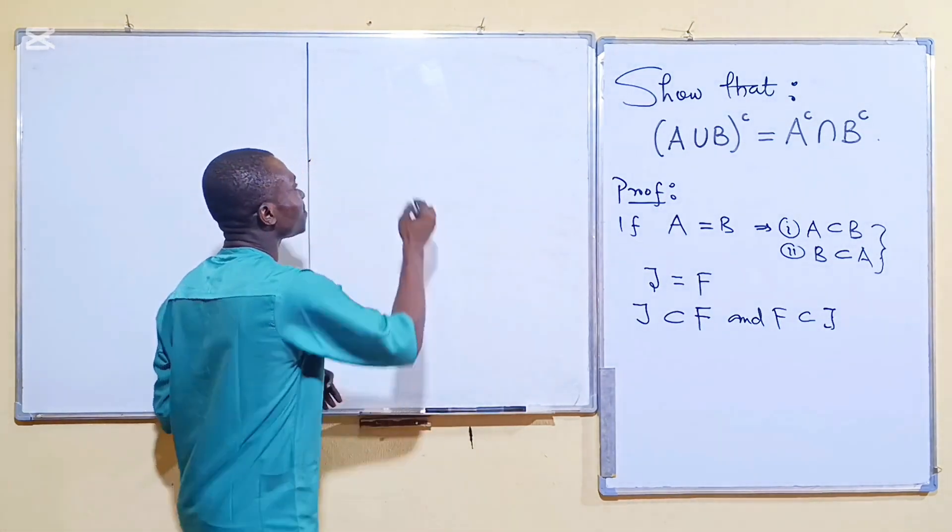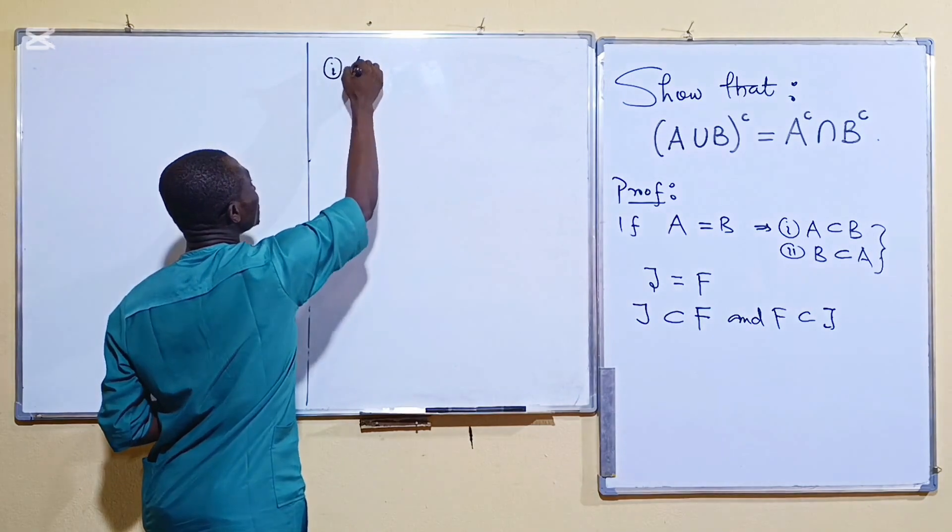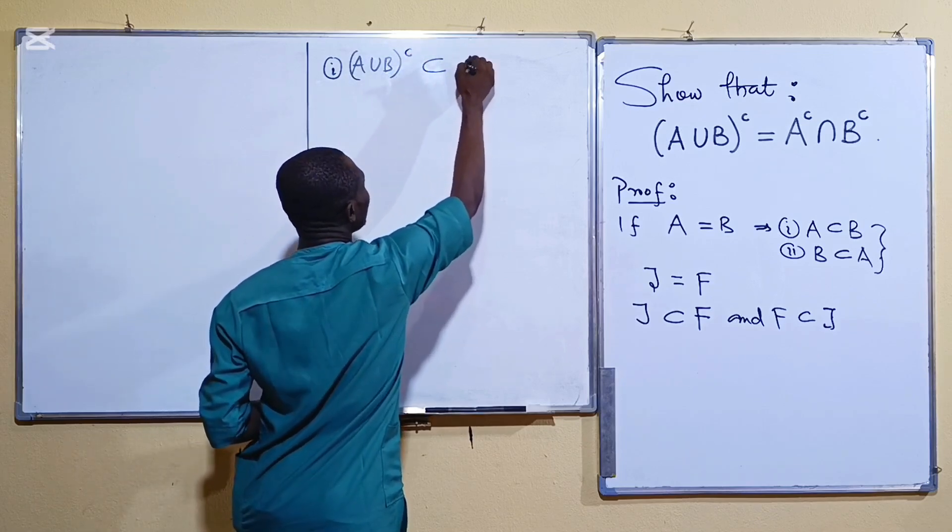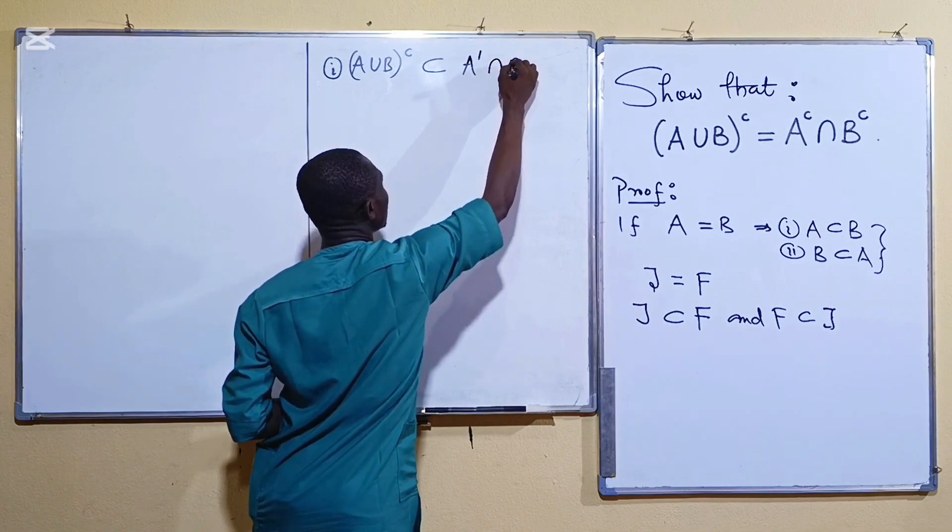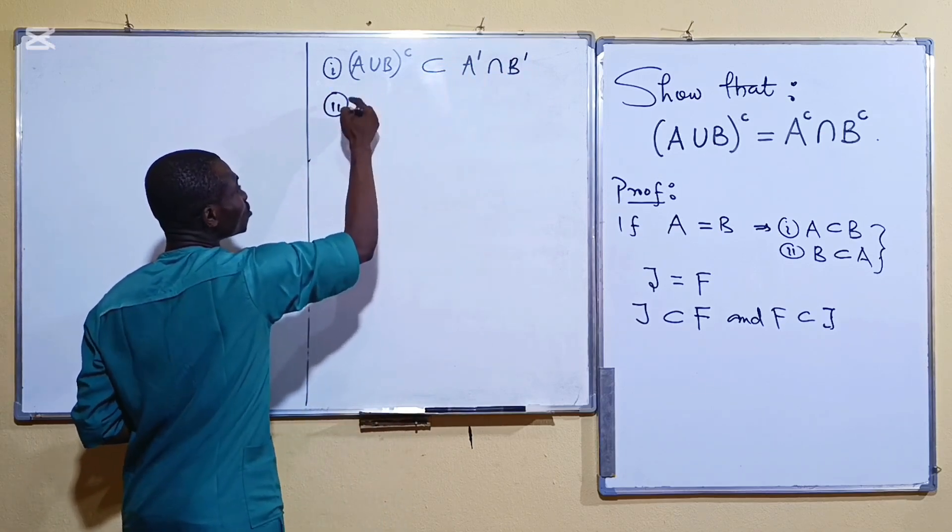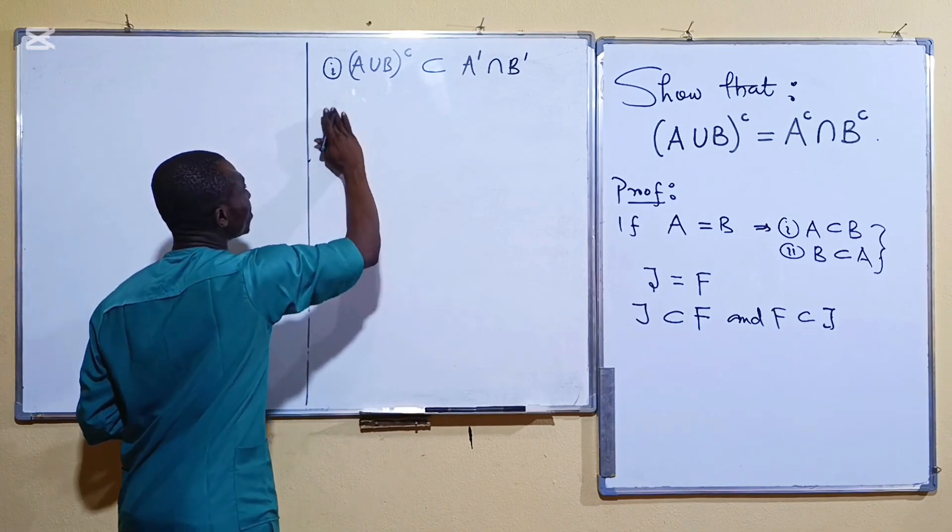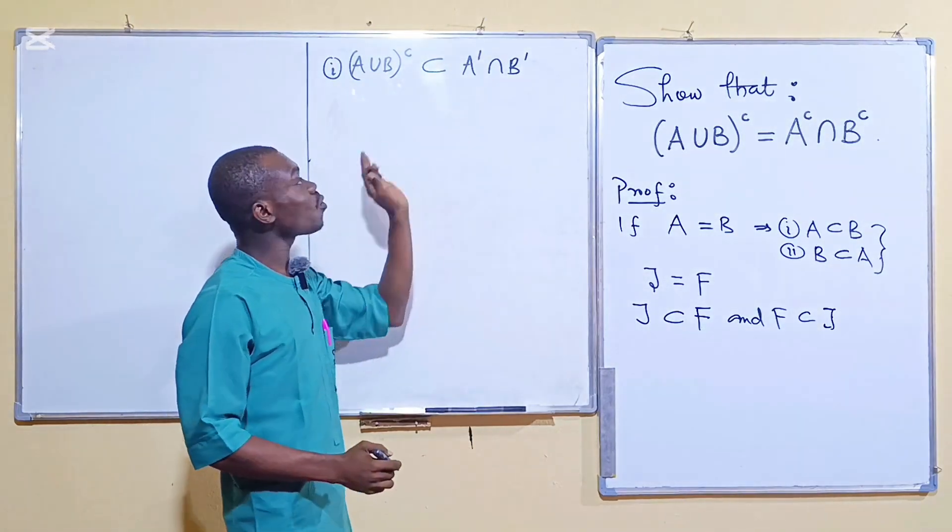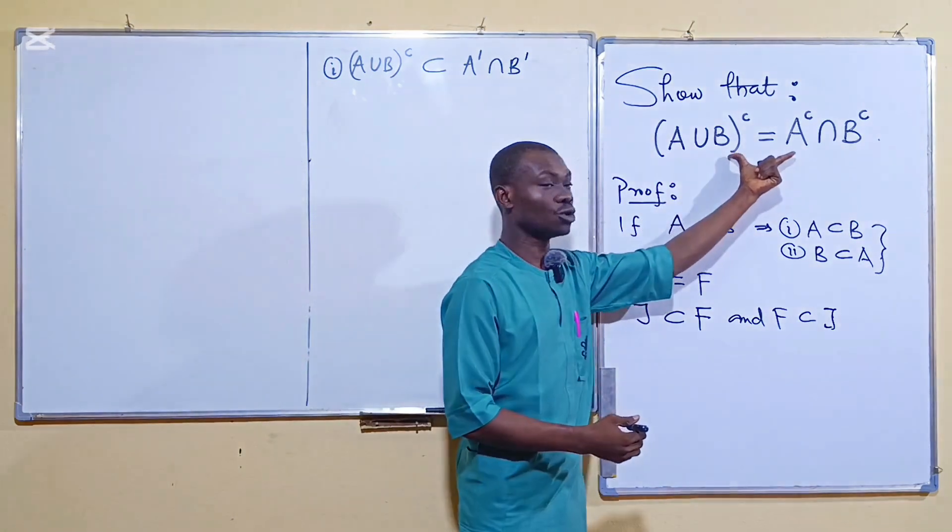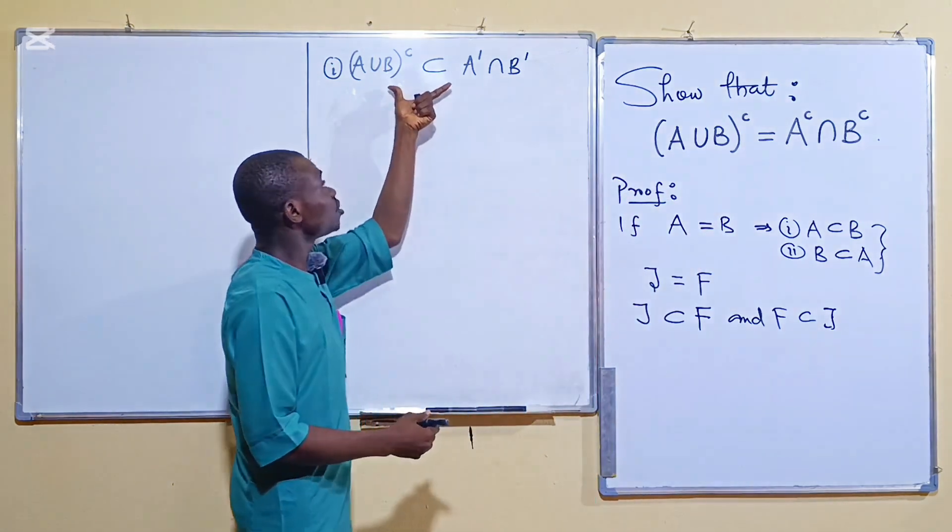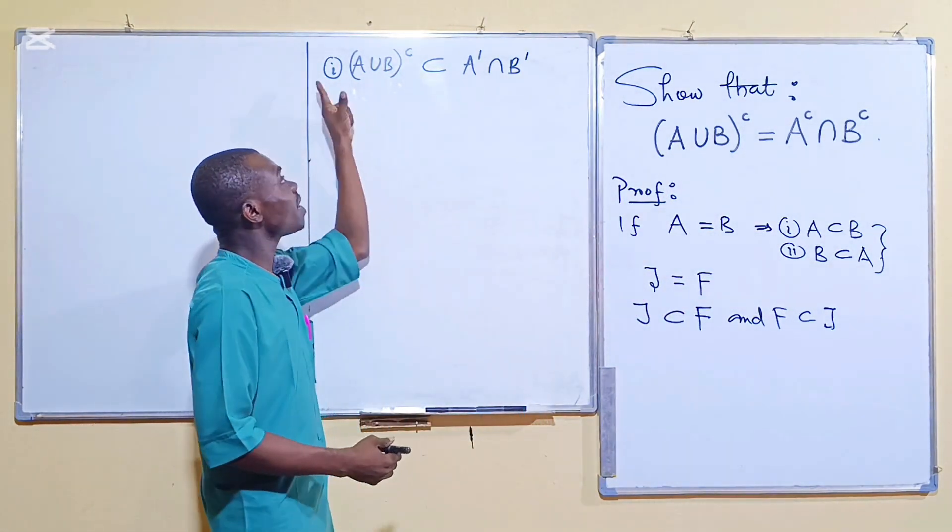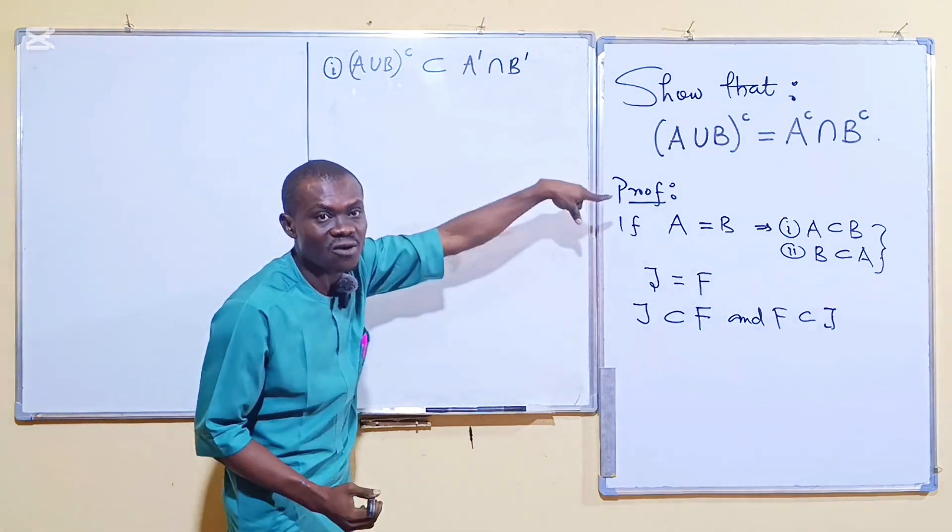Now to prove this, one we need to show that A union B complement is a subset of A complement intersection B complement. And then number two I should also show the other containment. So let's take it one after the other. To show this what are we required to do? First you should know what to do to show the entire thing. Then secondly to now show the two things you needed to show you need to know also what to do.